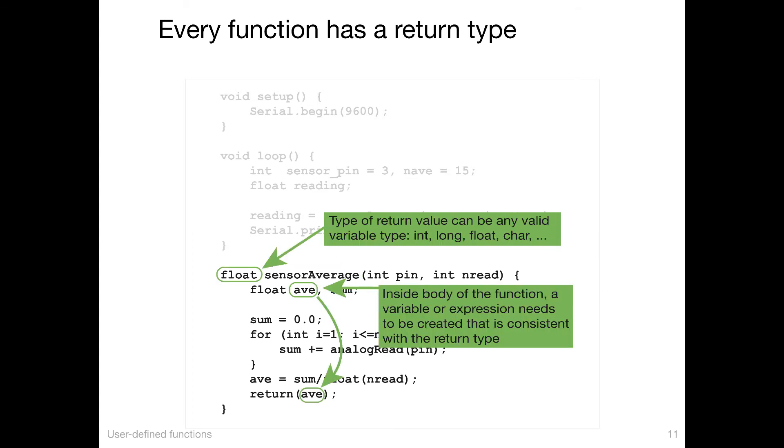Another part of the function declaration is the type. This determines what the function returns. So you've seen void setup and void loop before. Setup and loop return nothing. In other words, their return value is void or empty. In this case, we want to return the average of the readings. And it's natural to call that a float variable, allowing for, because you're averaging many integer values, it's reasonable that you would not get an integer as a result. So you would return a float.